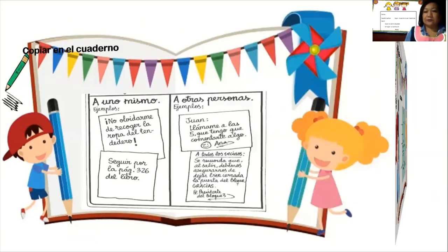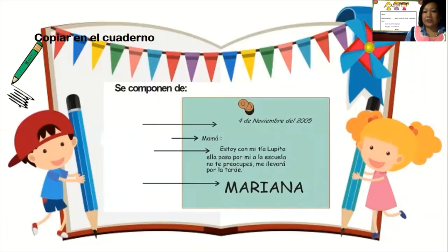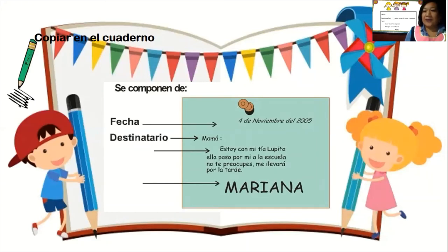Entonces, ¿de qué se compone una nota? En este ejemplo vemos primero una fecha, ¿verdad? Es importante para poder saber de qué día es esa nota, porque quizás la estamos leyendo ya un poco atrasado o el día siguiente. Entonces hay que tener en cuenta dejar la fecha. Luego, también el destinatario: ¿a quién va dirigida esta nota? En este caso, a la mamá. Luego, el mensaje, que es muy corto, muy conciso, muy claro de entender: es el contenido de esta nota. Y finalmente, la firma: ¿quién está dejando esta nota? En este caso es Mariana, que es la hija de mamá. Está explicando que se va con la tía Lupita, que ella fue quien recogió de la escuela.